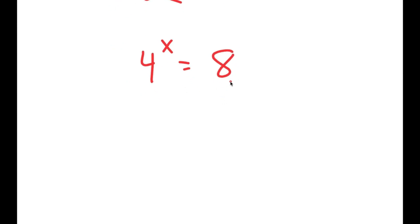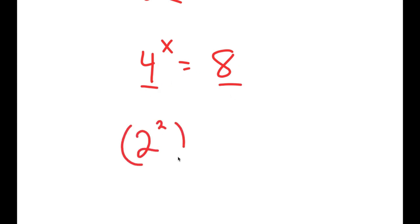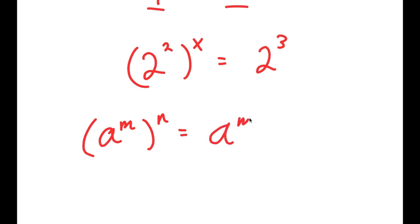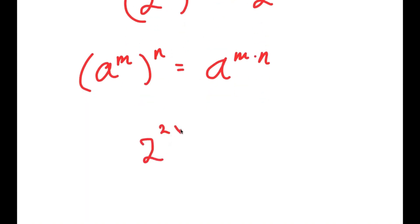Now from here we have a more simplified equation. To solve this, I'm going to make these two bases the same. So 4 is the same thing as 2 squared, and 8 is the same thing as 2 to the power of 3. And if I have something in the form a to the power of m to the power of n, this is equal to a to the power of m times n. So 2 to the power of 2 to the power of x is going to equal 2 to the power of 2x.